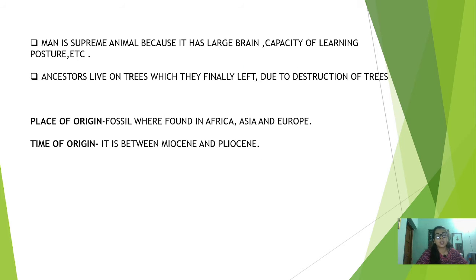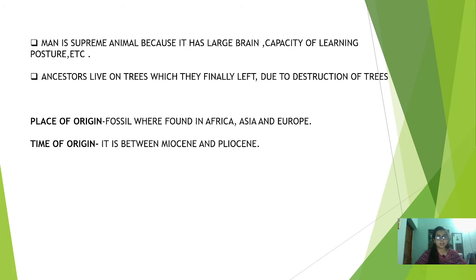We all know that man is a supreme animal. It is called supreme because it is the only social animal which has the capacity to learn. It has a large brain, it can use its intelligence, and it has a perfect posture. We have seen how science and technology have developed — it is all because of man.